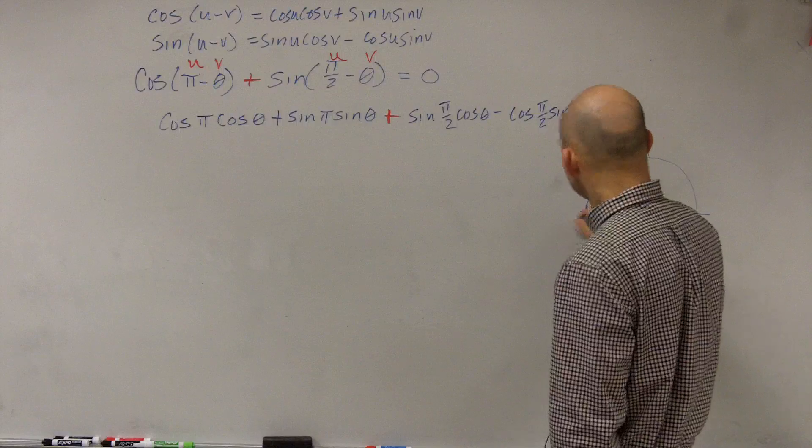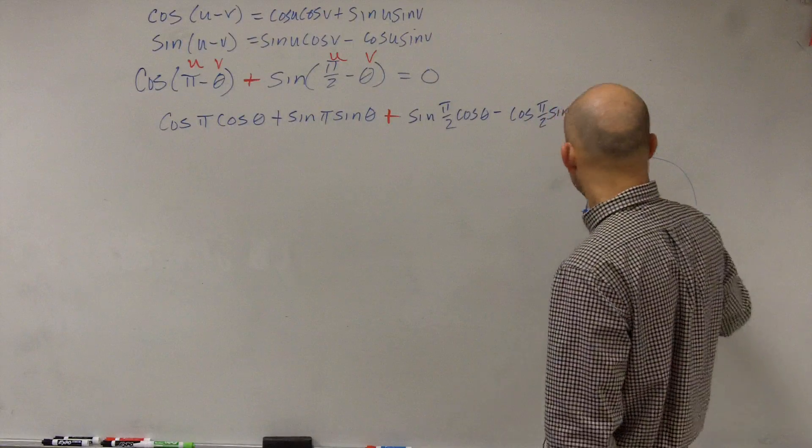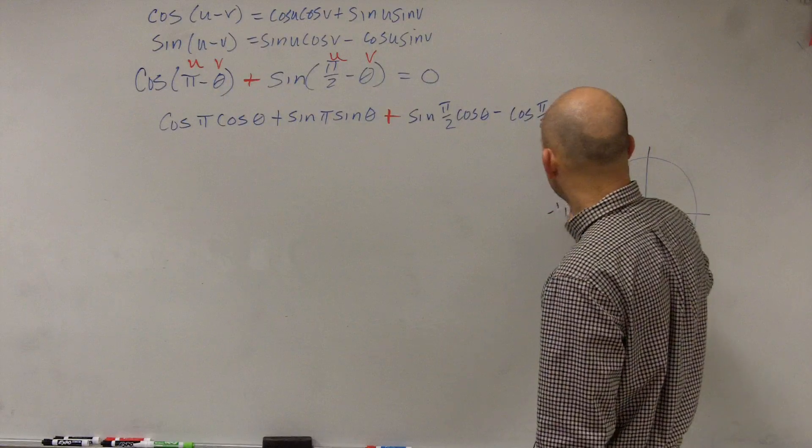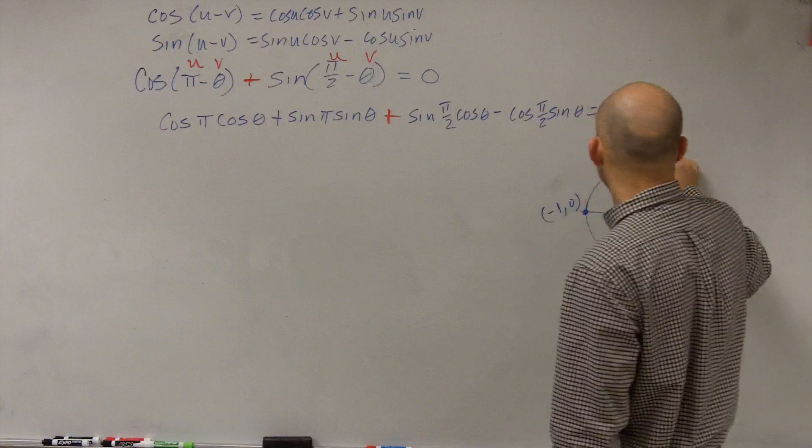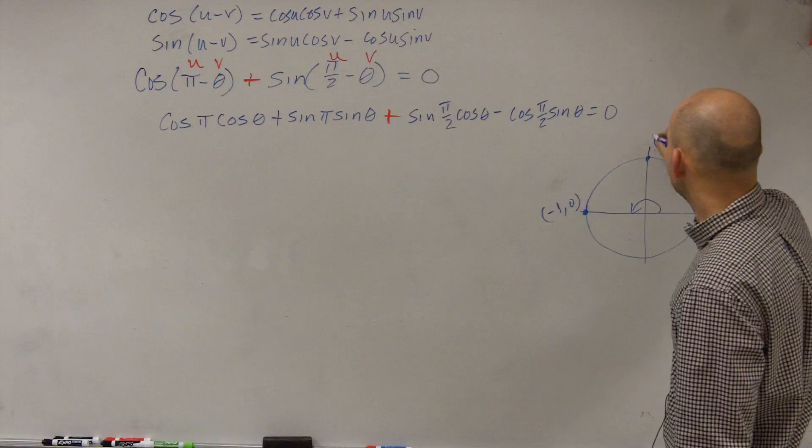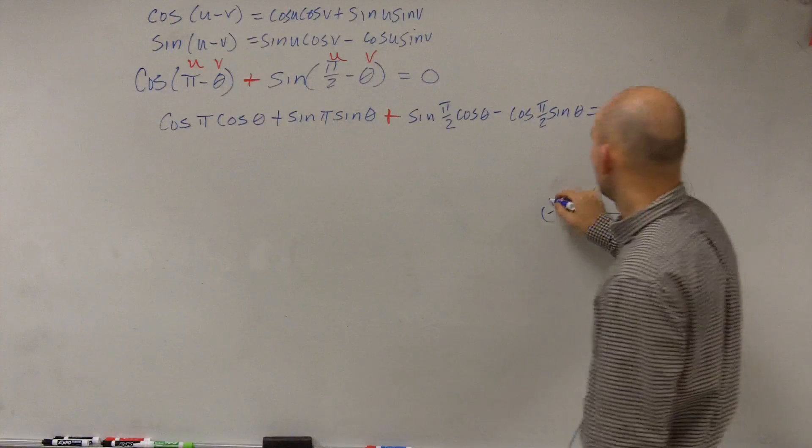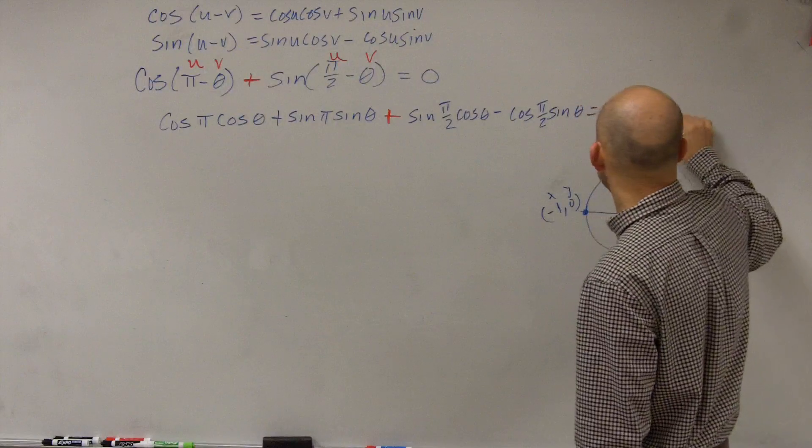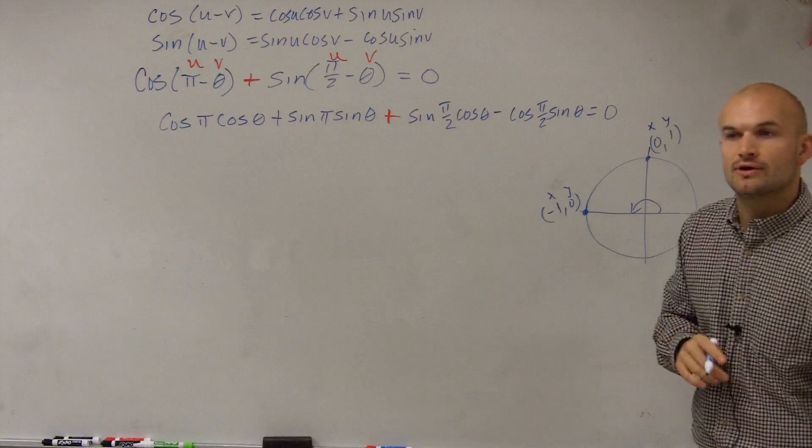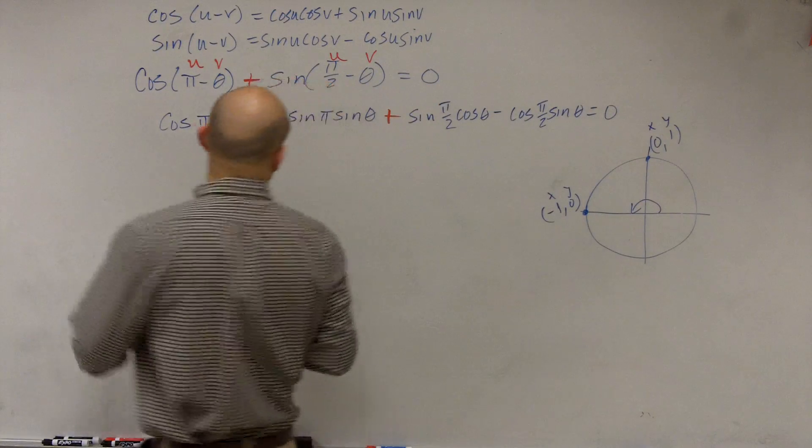And we know at pi, we're going to have, so at our angle pi, we have negative 1 comma 0. And at pi halves, we have 0 comma 1. So remember, when evaluating for cosine and sine, we've got to use our x and y coordinates.